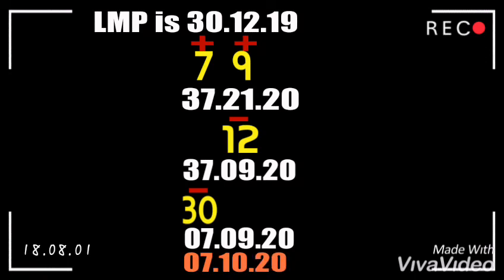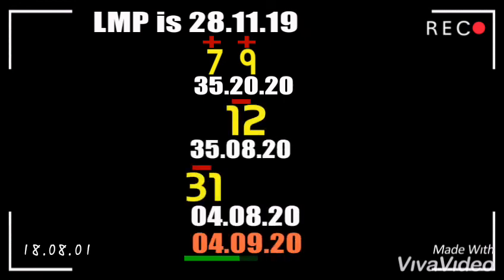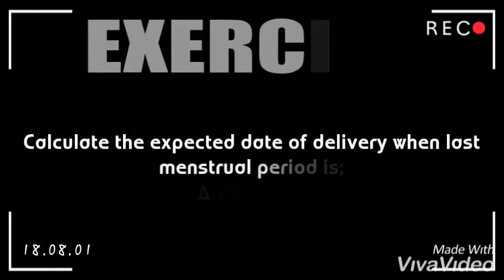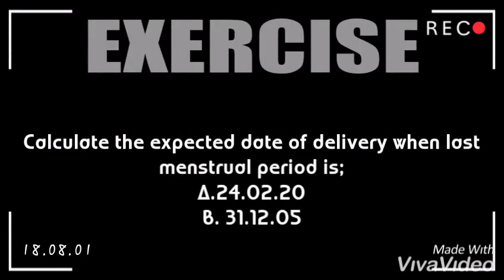So the final answer for example C is 07/10/20. We are done. Don't forget to check the next video on how to calculate the gestation age. There are some practice questions below — after solving them, give me your answers in the comment box. Thank you.